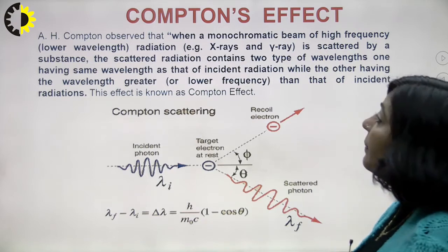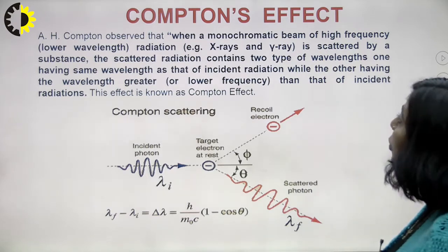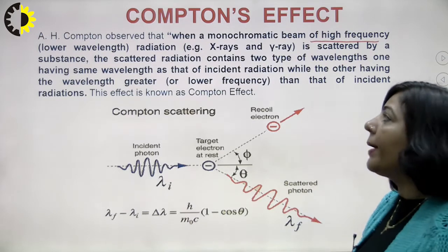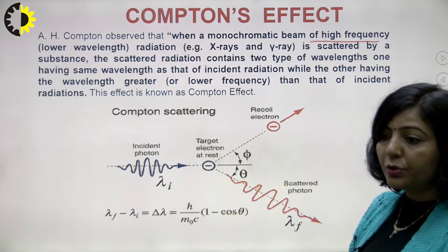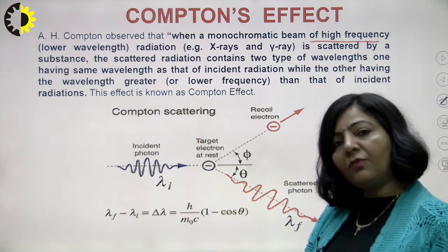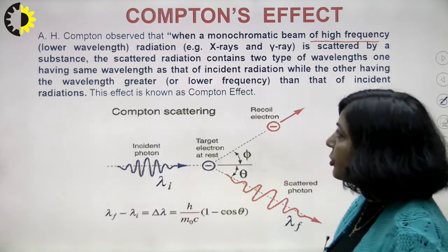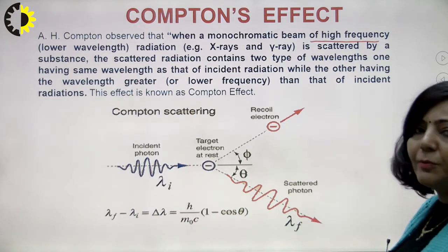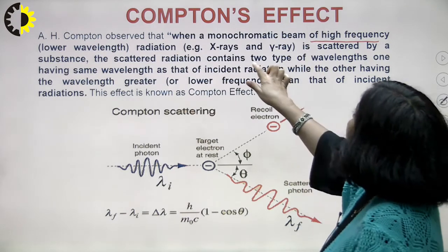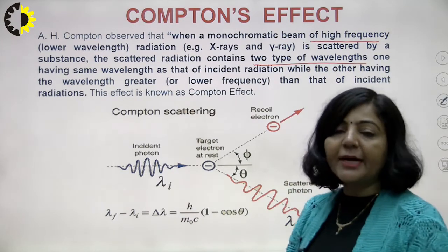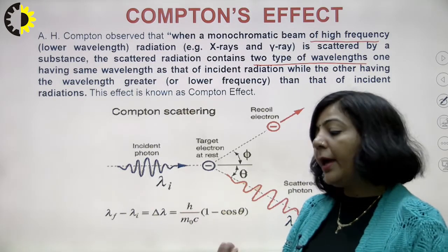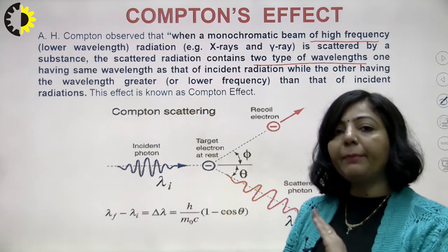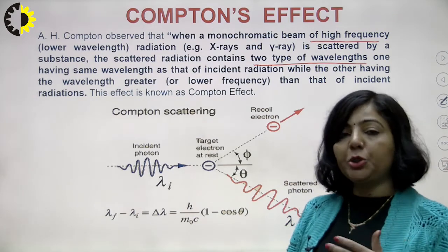In the Compton Effect, A.H. Compton observed that when a monochromatic beam of high-frequency electromagnetic radiation — such as x-rays or gamma rays, which have short wavelength and high energy — is scattered by a substance, the scattered radiation contains two types of wavelengths. You have a target material, such as a carbon block, and when a highly energetic beam of x-rays or gamma rays strikes it, those electromagnetic radiations get scattered.